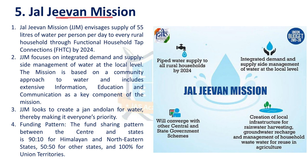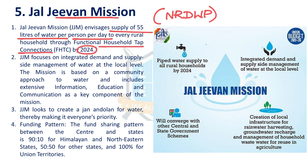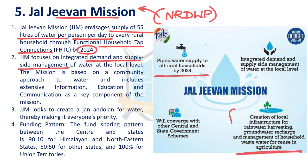The next issue is the Jal Jeevan Mission. Jal Jeevan Mission is the renamed version of the National Rural Drinking Water Project. This mission envisages supply of 55 litres of water per person per day to every rural household through functional household tap connections by 2024. It focuses on both demand and supply side management — demand side by providing piped water, and supply side through water harvesting, groundwater management, and wastewater treatment.